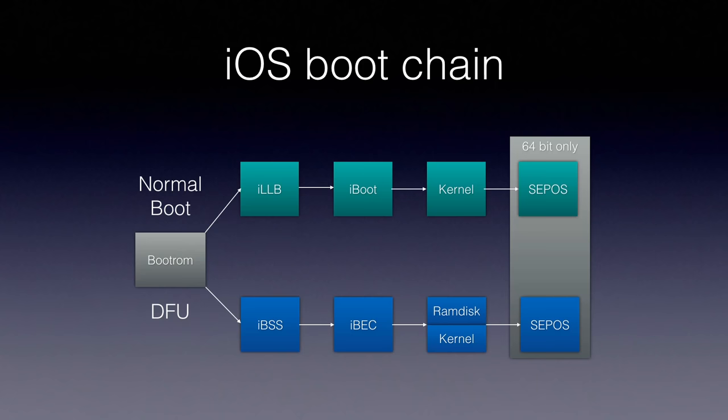This is the iOS bootchain. We have two routes: the normal boot and the DFU boot — DFU being device firmware upgrade. The boot ROM first boots the first stage bootloader, which boots the second stage bootloader — iBoot on normal boot or iBSS if you go the restore route. On normal boot the kernel boots, and for 64-bit devices, the SEP OS boots. On the DFU route, the RAM disk kernel is booted — much like a live system used for restoring.